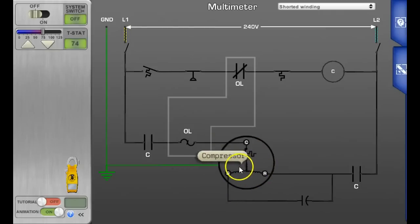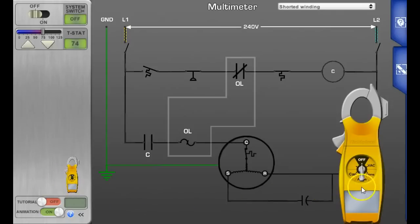So let's take a look at the shorted winding in a compressor. We turn our meter to ohms, make sure the power is disconnected, we've isolated the compressor, and we are going to start once again at the common to the run.